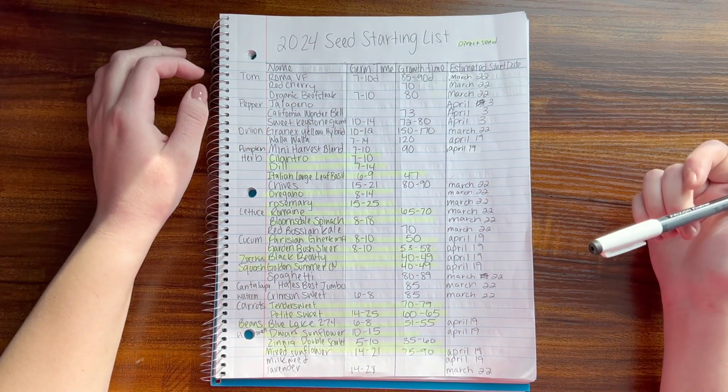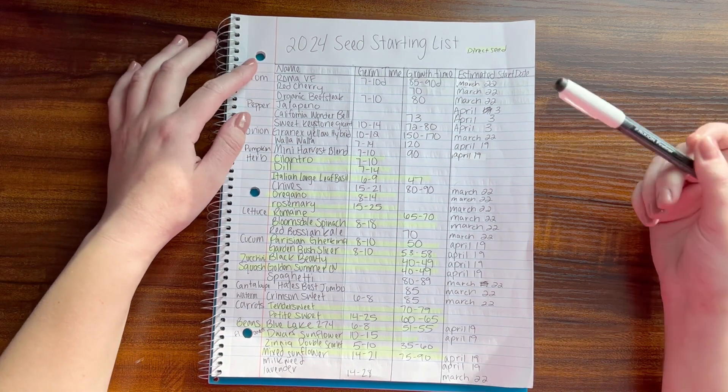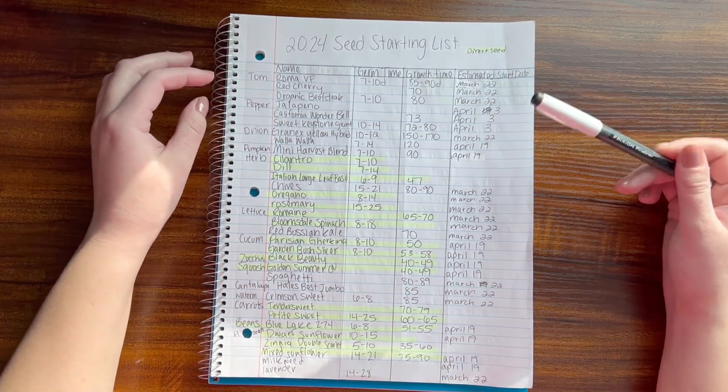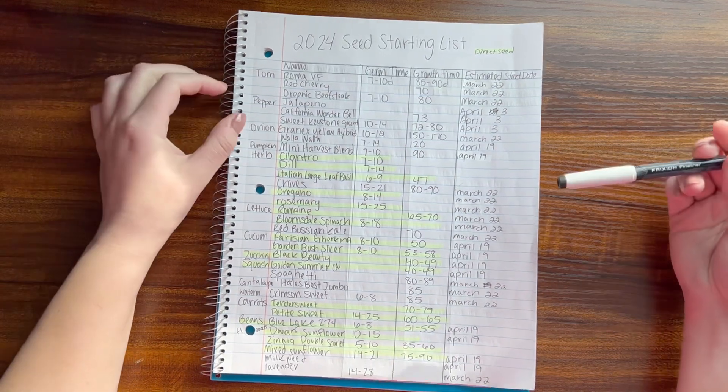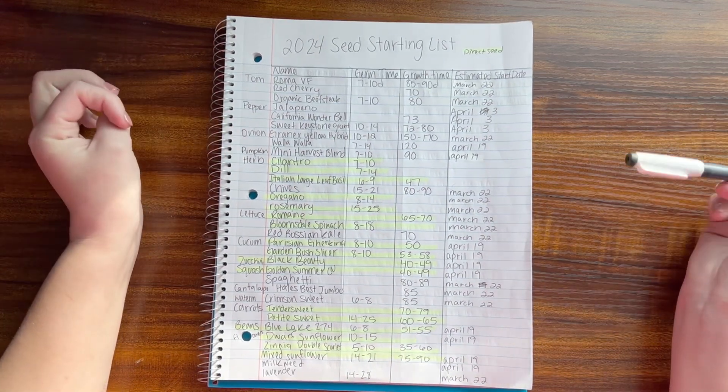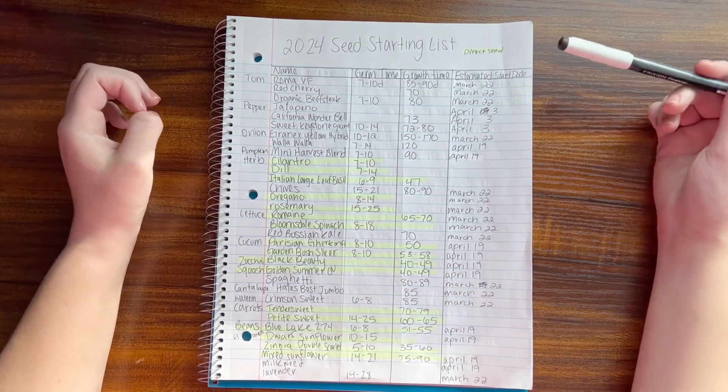Hello everybody, welcome back to Devon Tries a Budget. In this video we're going to do a garden overview for 2024. This is basically what I'm planning on planting, and then we'll see if I changed my mind or not.